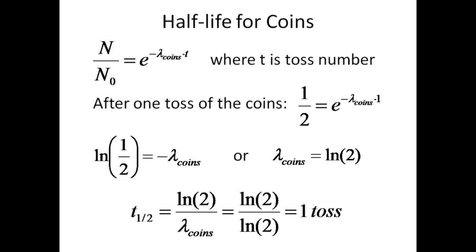For flipping coins, the probability of any single coin coming up heads is 1 half. Thus, 1 half equals e to the minus lambda times 1 single toss. Taking the log of both sides gives the decay constant for the coins equal to the log of 2. The half-life is thus log 2 over log 2, or 1 toss. 1 toss is enough to remove approximately 1 half of the coins in the sample. Makes sense.